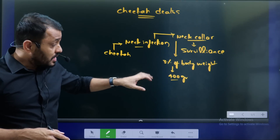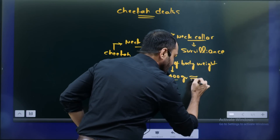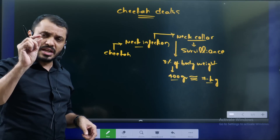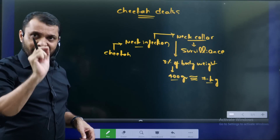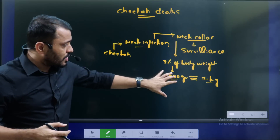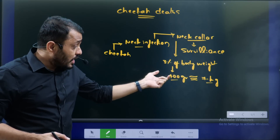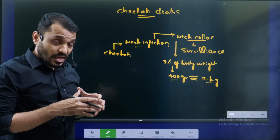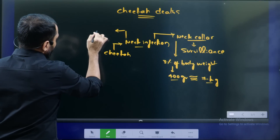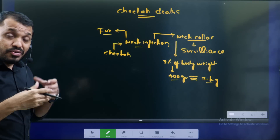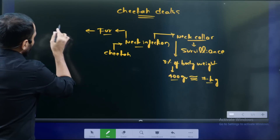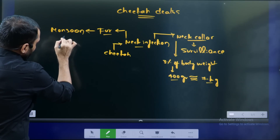That means the weight is equivalent — it has only a small effect normally. The neck collar on a Cheetah weighing approximately 7 kg causes a neck infection. During the monsoon season, the fur becomes wet, which worsens the collar's effect on the skin.